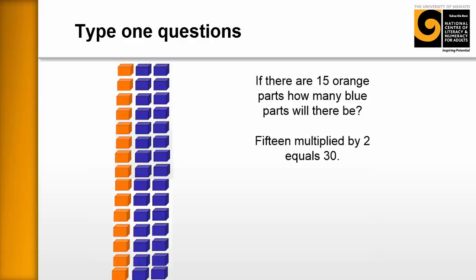If you can model it, do so. I end up drawing things on the board or trying to put it together for them. But if you can model it, not everybody has to do it and they can see it. That yes, if there's 15 orange parts, there'll be 30 blue parts. 15 multiplied by two equals 30. Then that's great. You want them to see that.